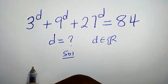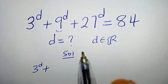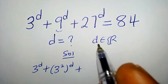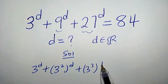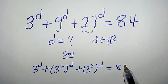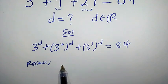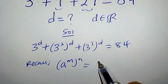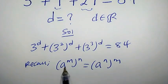Solution. We have 3 to the power of d, plus 9 which can be written as 3 to the power of 2, times d, plus 27 which can also be written as 3 to the power of 3, times d, equal to 84. Recall that whenever we have a to the power of m times n, this equals a to the power of n times m. Take note of this property.